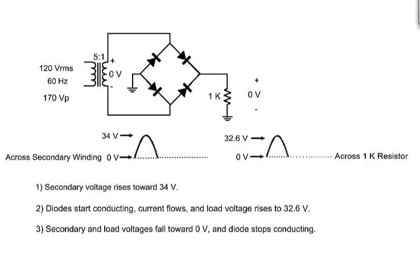The secondary voltage drops toward 0 volts. The load voltage falls with it. Finally, the input voltage drops below 1.4 volts, and the two diodes stop conducting. With no current flowing through the load, the voltage across it is 0.